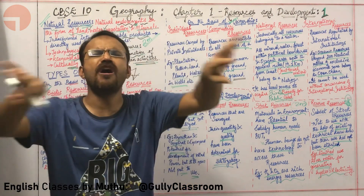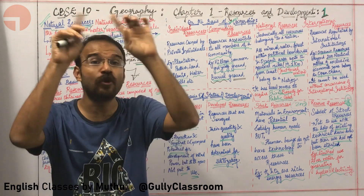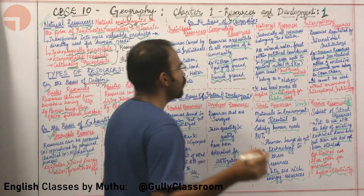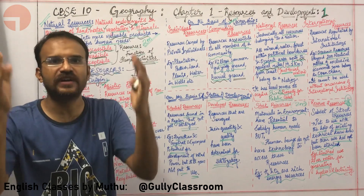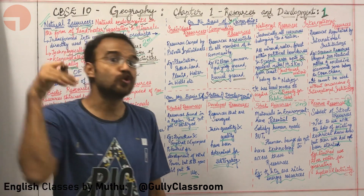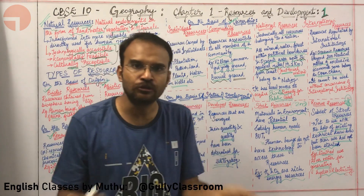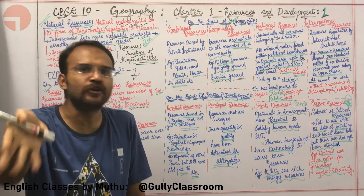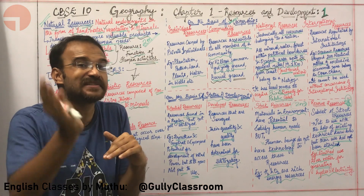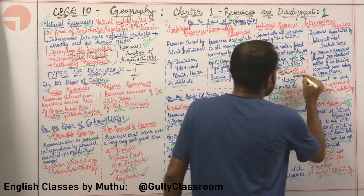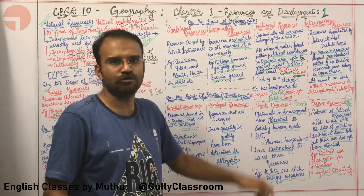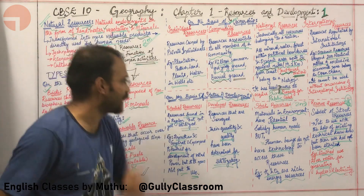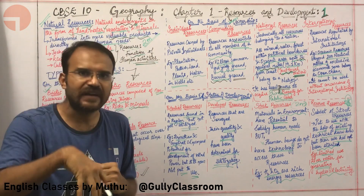National resources are all the resources — land, water, minerals — found within the political borders of a country. All resources present within 12 nautical miles from the borders of the country into the ocean are also included in national resources. The 12 nautical miles equals approximately 19.2 kilometres and is called territorial waters. All resources found in territorial waters belong to the nation, and the nation has legal powers to acquire private property for public good.